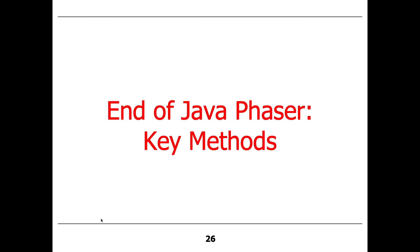So those are the key methods in the phaser. Even knowing what those methods do doesn't really shed much light on how to use the phaser — that's one of the things that makes it complicated. It's hard to understand its semantics just by knowing the methods it provides. To remedy this, we're going to talk about an example application or two.